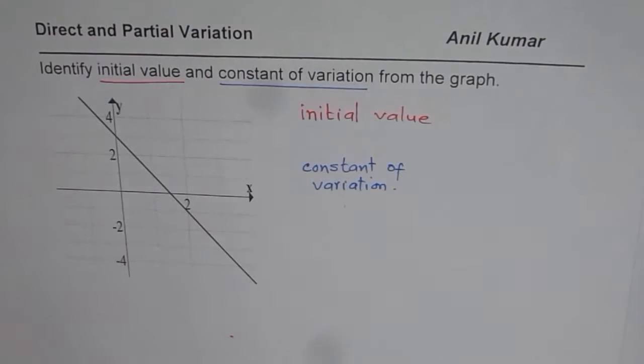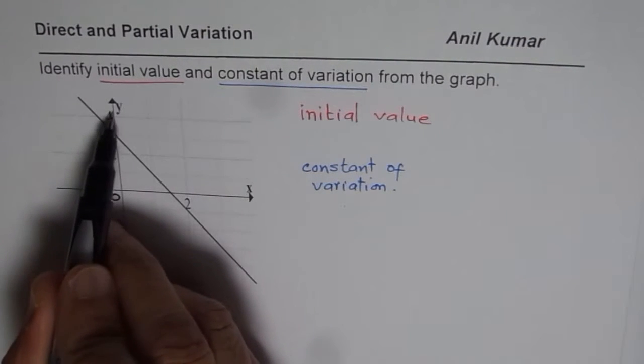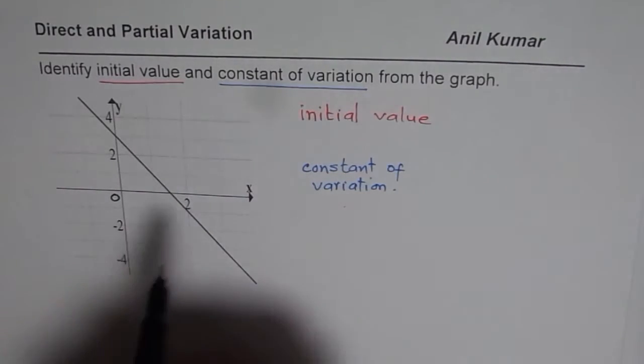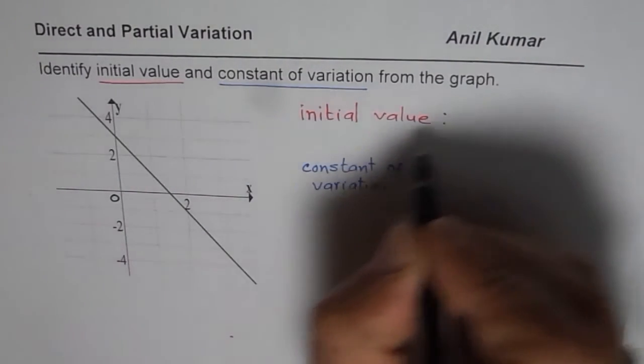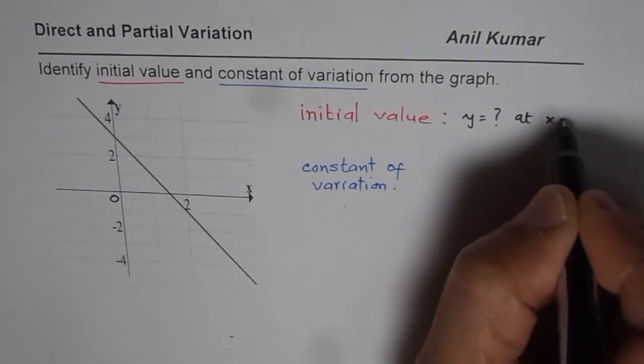Now, initial value is the value when the independent variable equals 0. We have dependent variable as y and independent as x. So initial value is: what is y at x = 0?